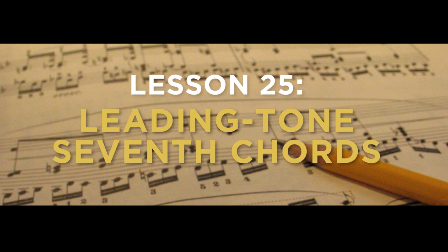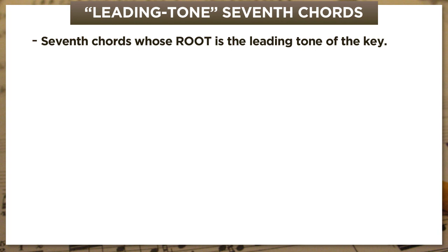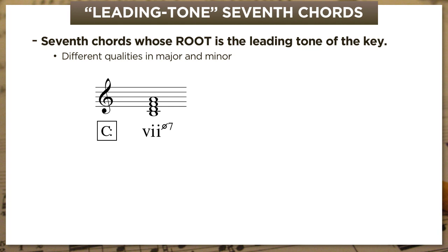Now, what does that mean? Well, as their name suggests, these are seventh chords whose root is the leading tone of the key—so seventh chords with the Roman numeral VII. And it turns out these have different qualities in major and minor. In major keys, they're going to be half-diminished seventh chords. And then in minor keys, they're going to be fully diminished seventh chords.